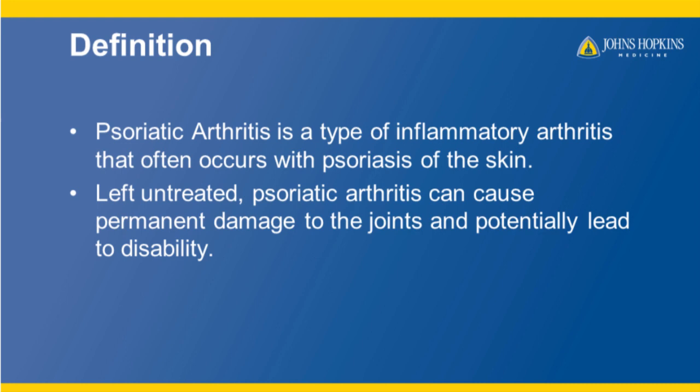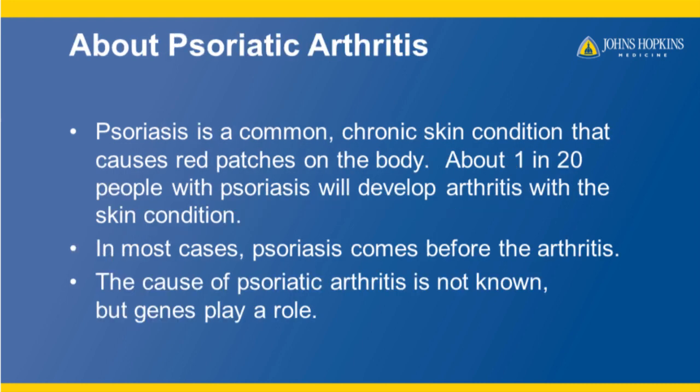The definition of psoriatic arthritis is that it is a type of inflammatory arthritis that often occurs with psoriasis of the skin. Left untreated, psoriatic arthritis can cause permanent damage to the joints and potentially lead to disability. Psoriasis is a common chronic skin condition that causes red patches of the body. About one in twenty people with psoriasis will develop arthritis with the skin condition. This is called psoriatic arthritis.